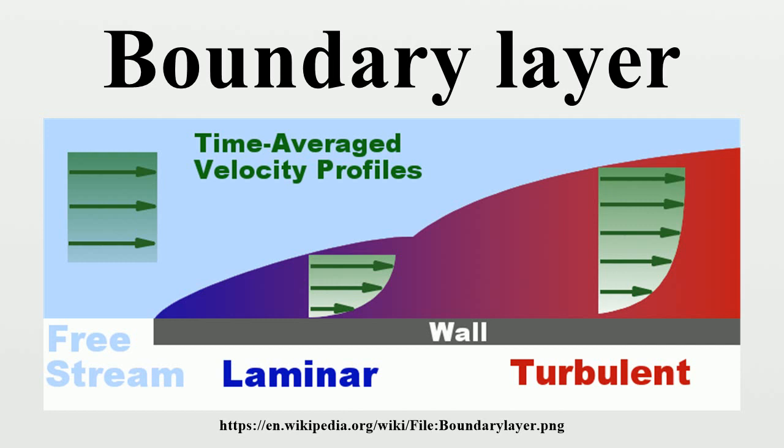Special wing sections have also been designed which tailor the pressure recovery so laminar separation is reduced or even eliminated. This represents an optimum compromise between the pressure drag from flow separation and skin friction from induced turbulence. When using half models in wind tunnels, a peniche is sometimes used to reduce or eliminate the effect of the boundary layer.